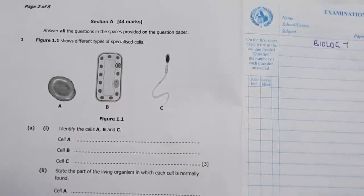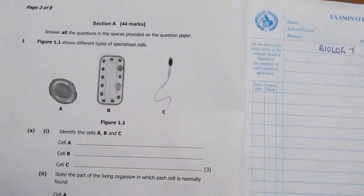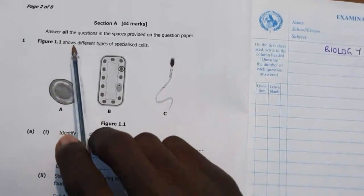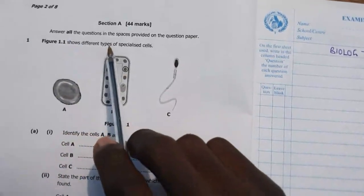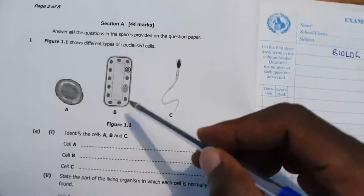Alright guys, welcome to this video. In this video I have a good question that came in 2019 biology. The internal question one says Figure 1.1 shows different types of specialized cells. Now these are specialized, they are not just any type of cells. They are specialized, that means they play specific roles in living organisms.